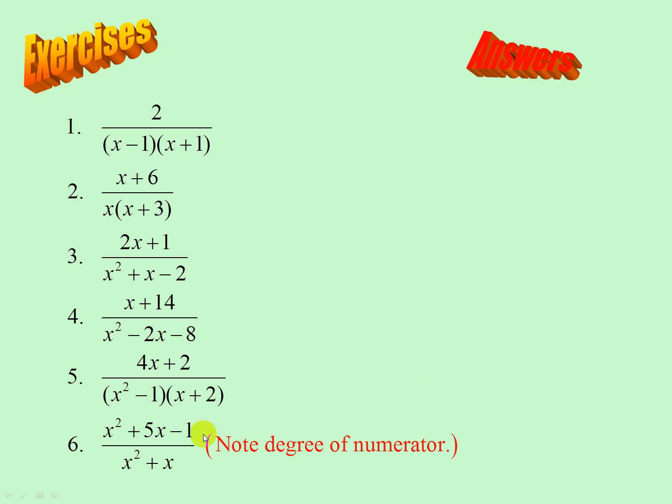Note: look at the degree here — x squared over x squared, second degree over second degree. Remember at the beginning we said the numerator must be of lower degree than the denominator, so think about that.